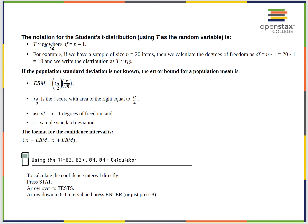The notation for the student T distribution is t_df, where df equals n minus 1. For a sample size of n equals 20, degrees of freedom equals 19, and we write the distribution as t_19. The margin of error formula uses t alpha over 2 — not z — times s divided by the square root of n, where t alpha over 2 is the t-value with area to the right equal to alpha over 2.